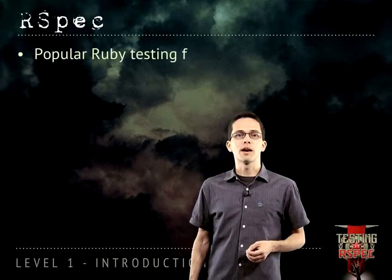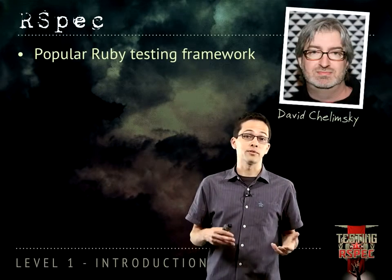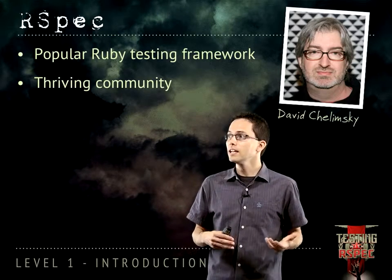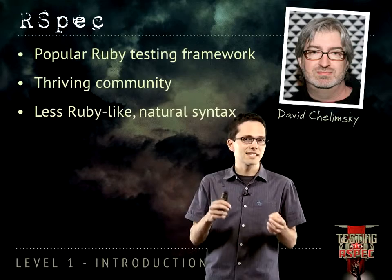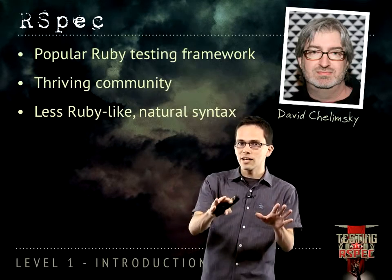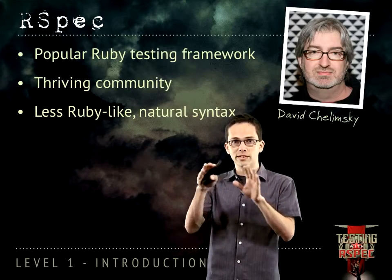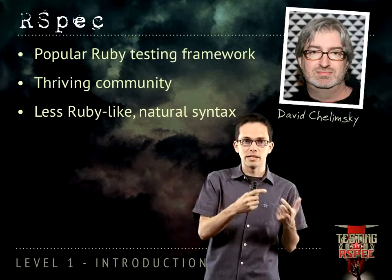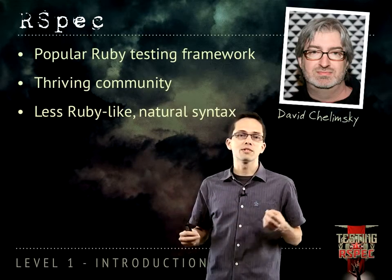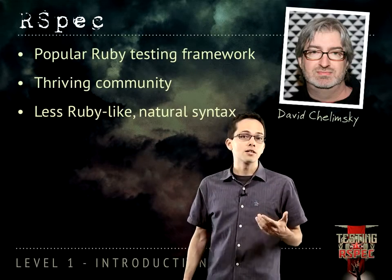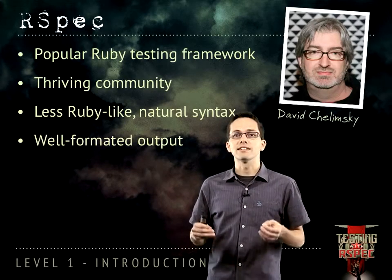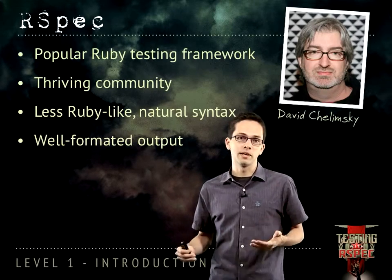RSpec is one of the most popular Ruby testing frameworks, and because it is so popular, there's a huge community of developers behind it, which means there's lots of extensions and add-ons. It also has a less Ruby-like syntax — you might call it a domain-specific language for testing. RSpec also has very good output when you run your tests, so you can very easily see what has gone wrong and quickly debug it.